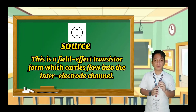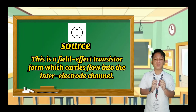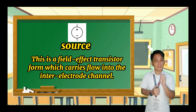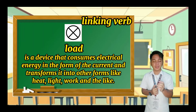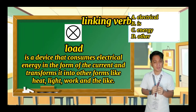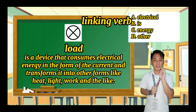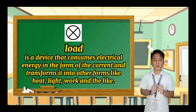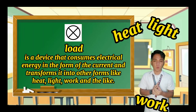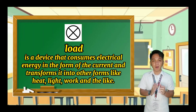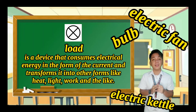Source: this is a field effect transistor from which carriers flow into the inter-electrode channel. An example of this is a battery or electrical outlet. The last symbol is load. When we say load, this is a device that consumes electrical energy in the form of current and transforms it into other forms like heat, light, and work. Examples of load are bulb, electric fan, electric kettle, and more.